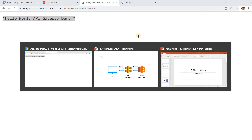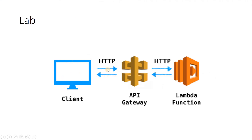We are getting 'Hello World API Gateway Demo', which is coming from the Lambda function. This completes our demo - we hit a URL with an HTTP GET request, it went to API Gateway, API Gateway triggered AWS Lambda, got the response, and returned it to our console. In upcoming videos, we'll do more advanced labs connecting Lambda with S3, RDS, or EC2 to fetch real database data. I hope the fundamental concept of API Gateway is clear. Please like, share, subscribe, and press the bell icon for notifications.